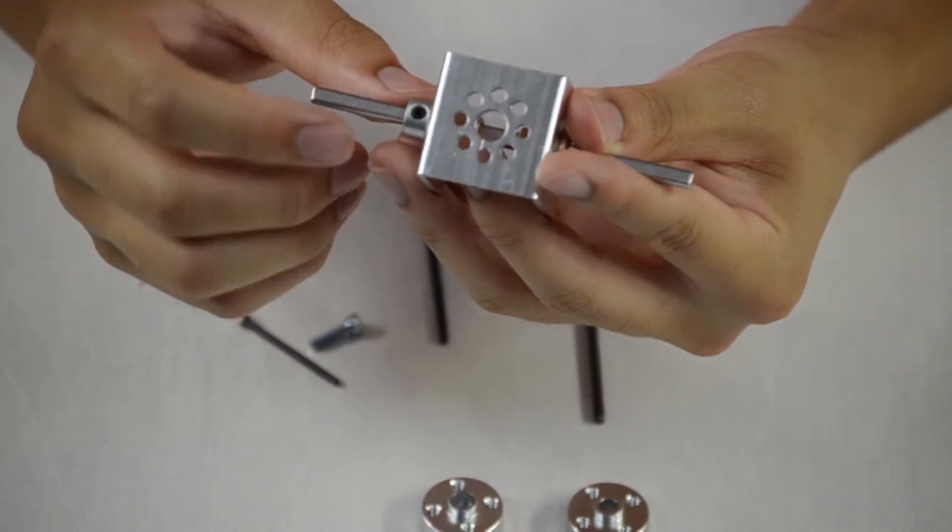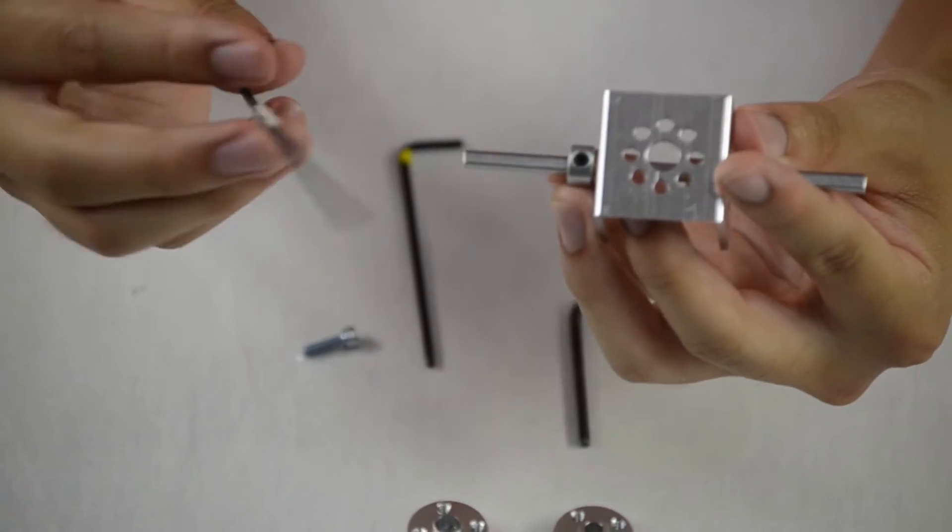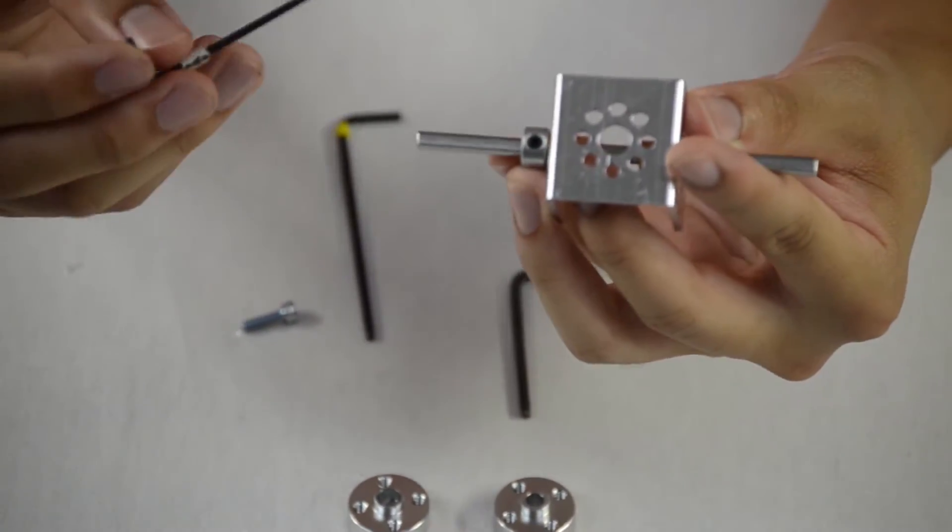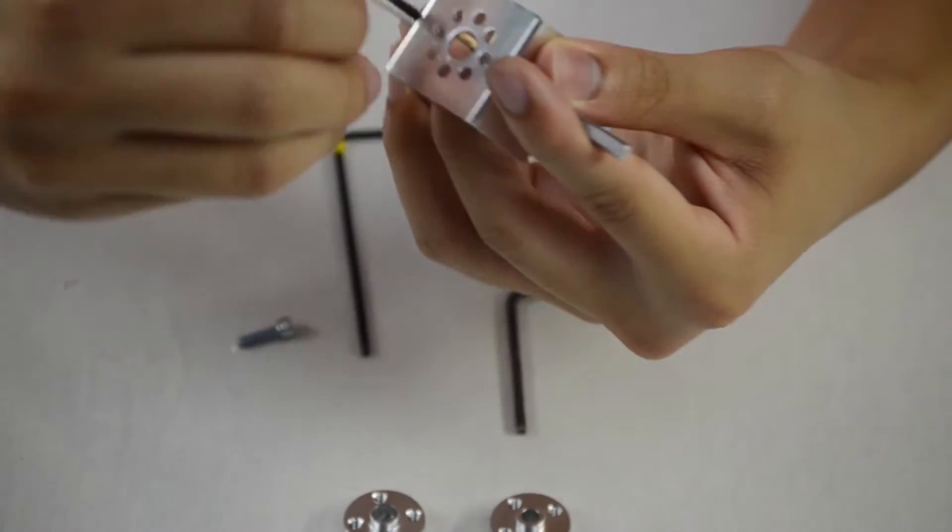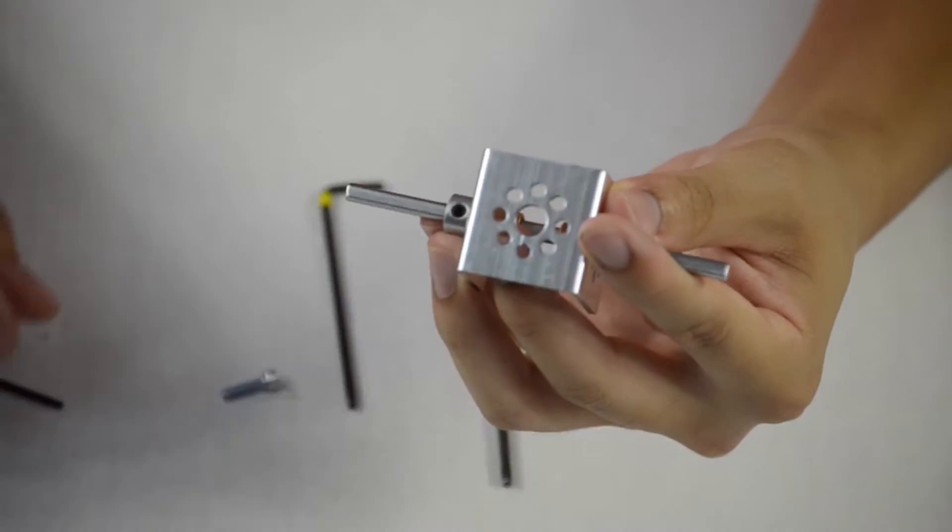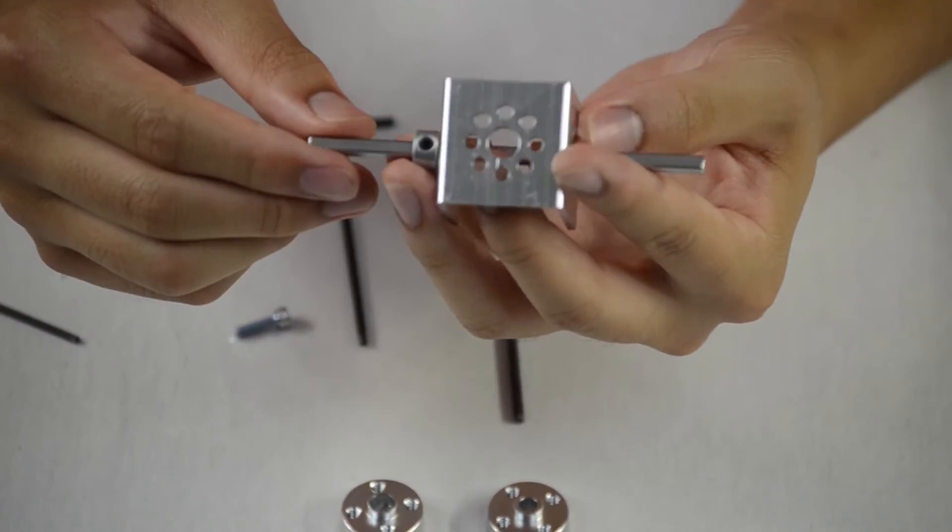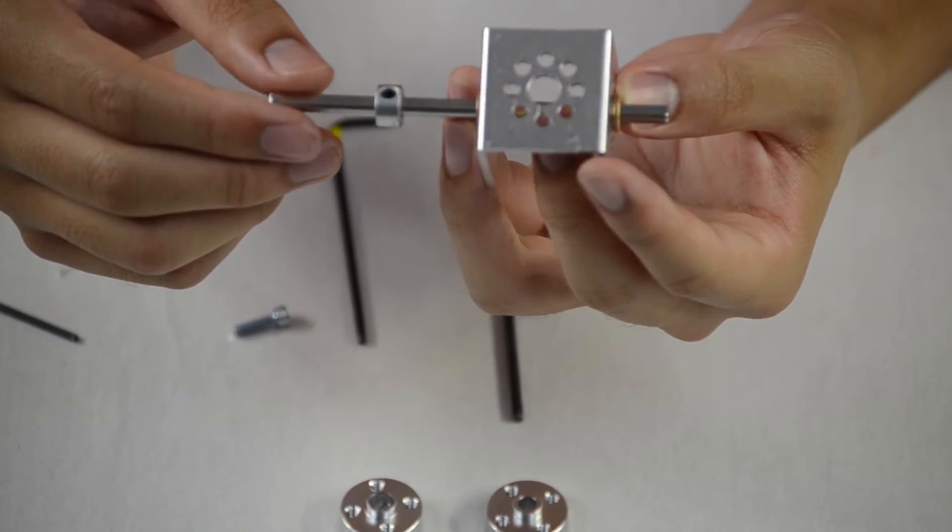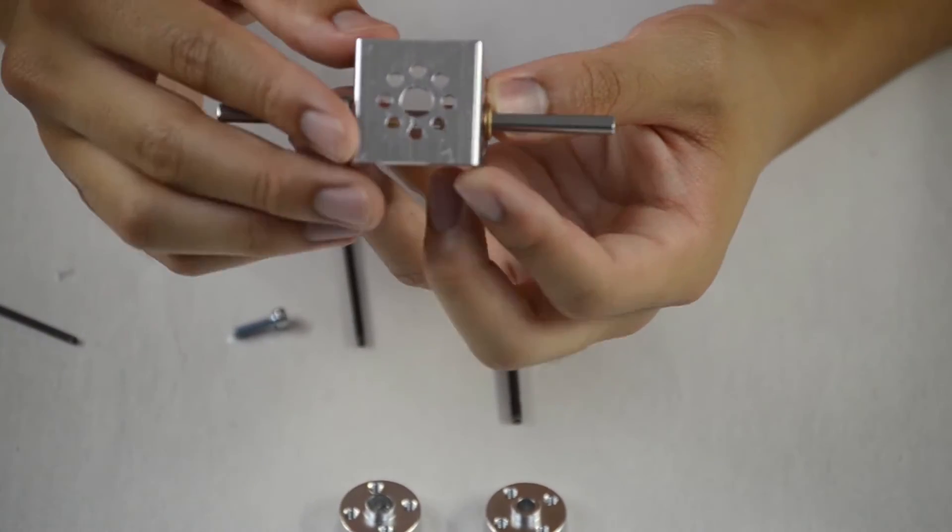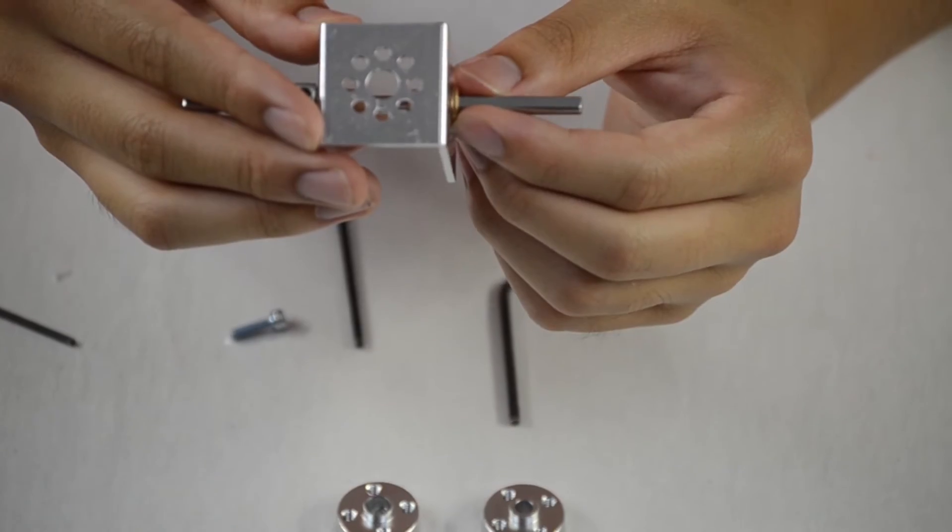This axle can't move in this direction. It still can, however, move in this direction. Just to stop that from happening, you simply just put on another axle collar on this side.